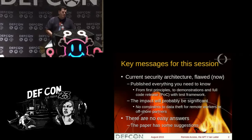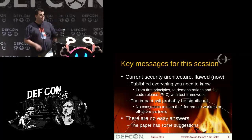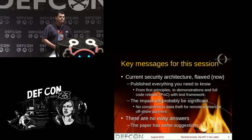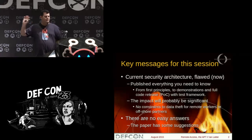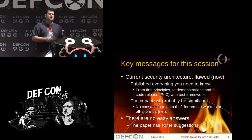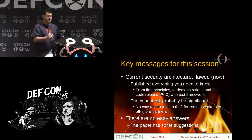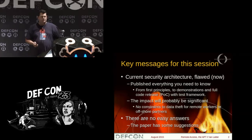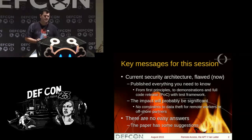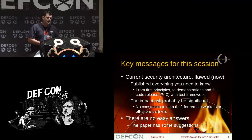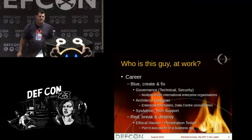Key messages for this session: your current security architecture is flawed. I've published everything you need to know — it's all on the website, from first principles to demonstrations, full code releases, proof of concept, including a test framework for the first set of technologies. The impact is going to be significant. There are no constraints to data theft for remote workers or offshore partners today, and there are no easy answers, but the paper has some suggestions.